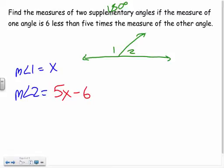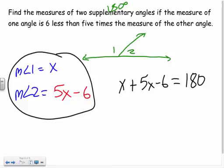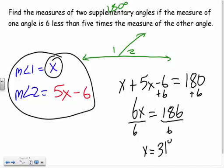Since they're supplementary, measure of angle one plus measure of angle two equals 180. Substituting: x plus (5x − 6) = 180. Combining like terms: 6x − 6 = 180, so 6x = 186. Dividing by 6, x = 31. That gives measure of angle one as 31 degrees.